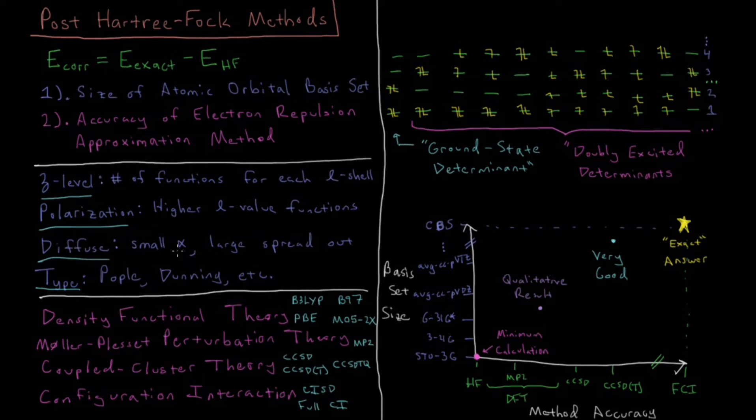Diffuse functions are things which have a small exponent in how they decay, so they're very large and they're very spread out. This allows atoms to respond to very subtle influences in what their environment is doing to them and how they interact with other electrons. This is particularly important for things like anions, because anions are less bound by their nucleus and the valence electrons are much more spread out.